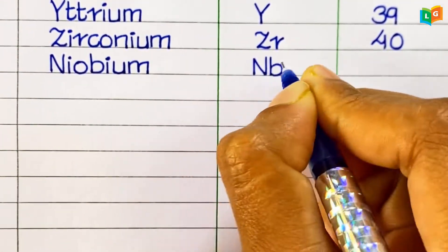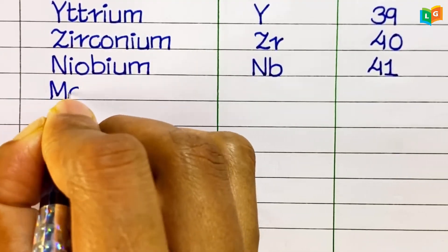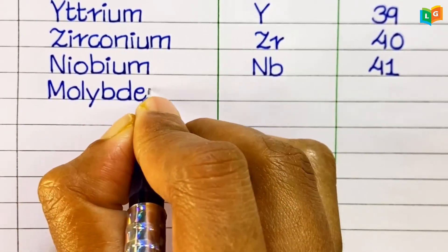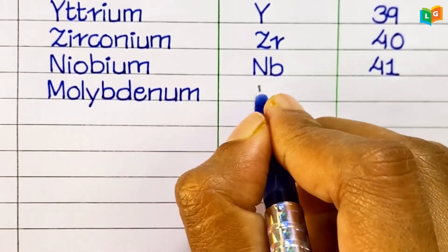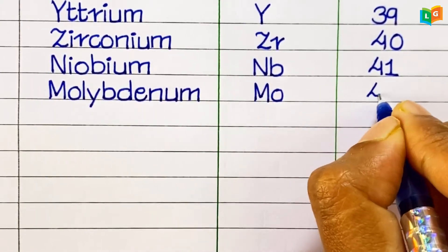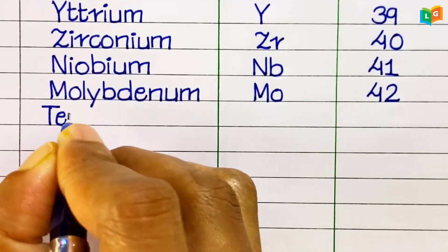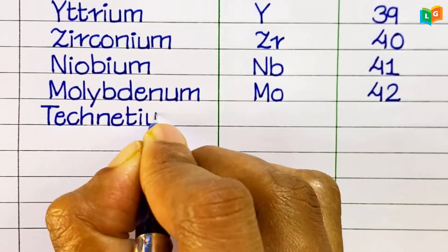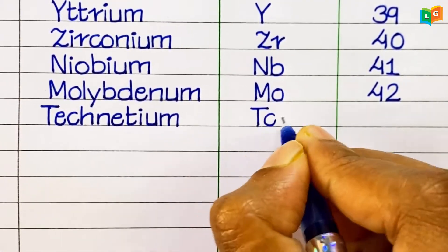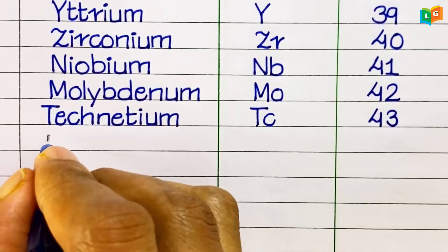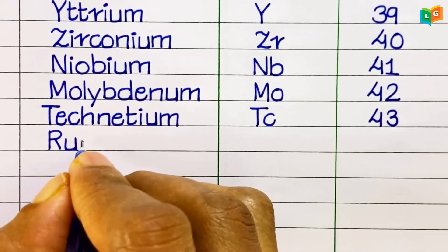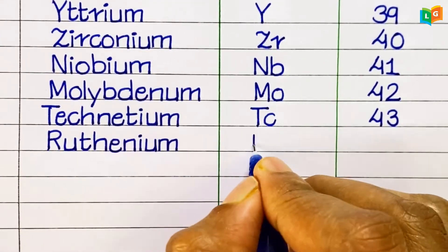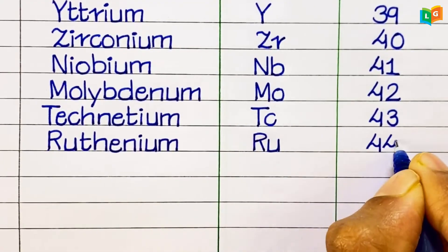Niobium, symbol Nb, atomic number 41. Molybdenum, symbol Mo, atomic number 42. Technetium, symbol Tc, atomic number 43. Ruthenium, symbol Ru, atomic number 44.